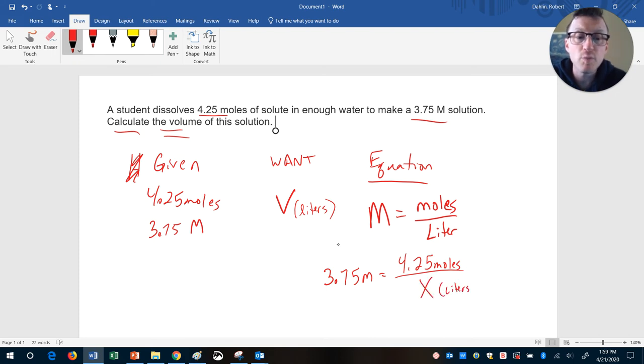We're going to do a little bit of algebra here. Multiply both sides by X, divide both sides by 3.75 to get the X by itself. You'll end up with 4.25 divided by 3.75.